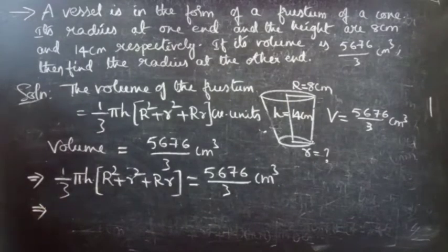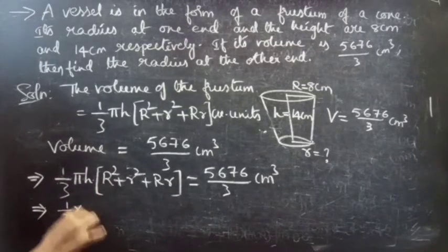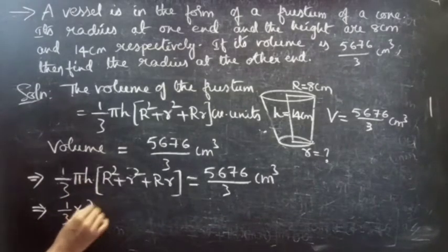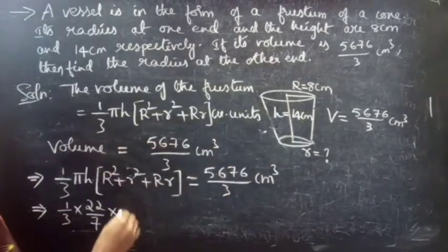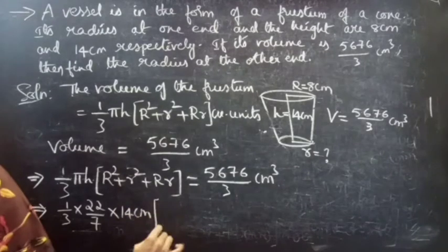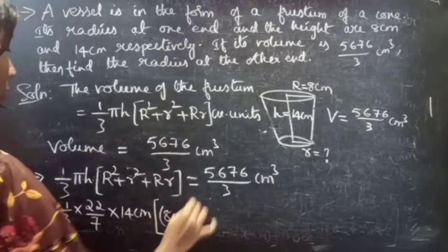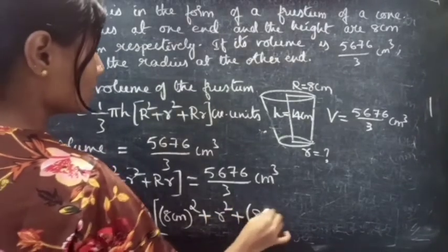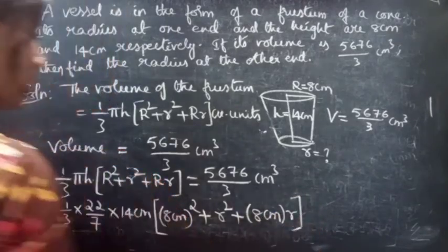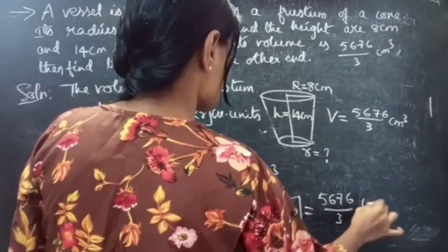Now we substitute the values: R = 8 cm, h = 14 cm, and π = 22/7. So: (1/3) × (22/7) × 14 × (8² + r² + 8r) = 5676/3 cm³. That gives us (1/3) × (22/7) × 14 × (64 + r² + 8r) = 5676/3 cm³.